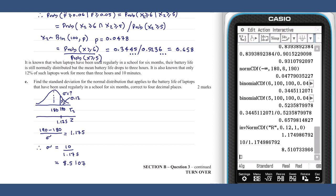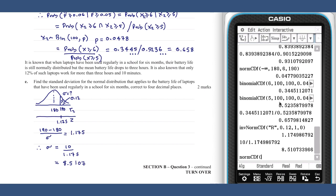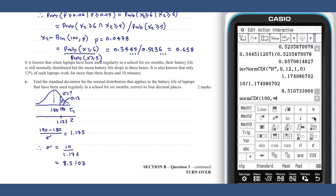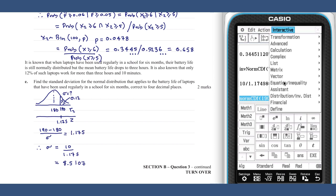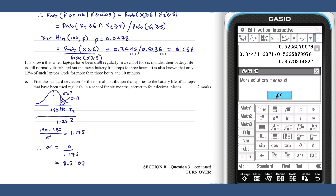Alternatively, the ClassPad has a very efficient way of handling this type of question, treating the normal distribution as an equation to be solved. We enter the information we know about the distribution — the unknown standard deviation — and the probability provided.